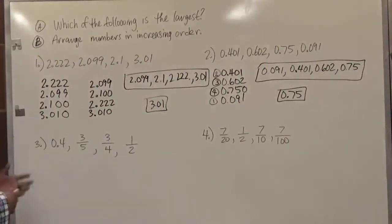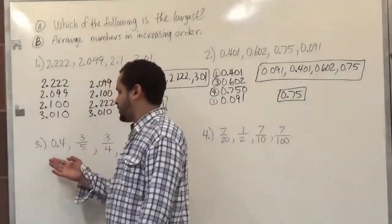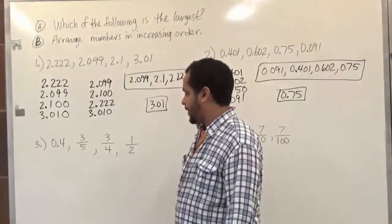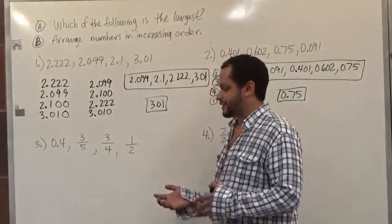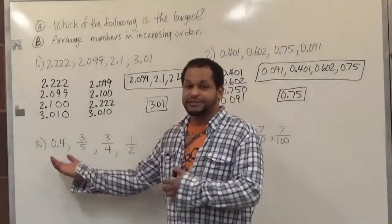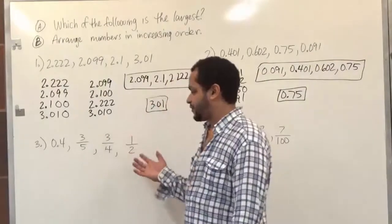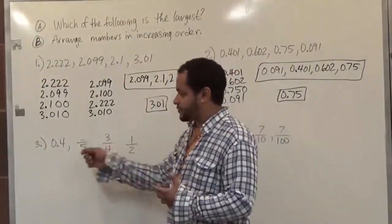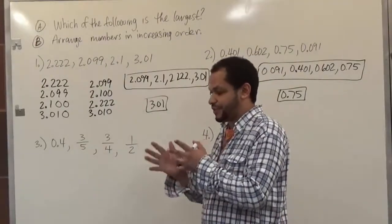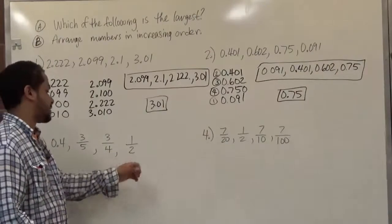Now in the next problem we have decimals and fractions. There are two ways to do this — we can either change all numbers to fractions or all fractions to decimals. The easiest way is changing all numbers to decimals. If we chose fractions, we'd have four fractions and would need to find the LCD. Since we've been using this effective system with decimals, we're going to convert all of these fractions to decimals by dividing each one.